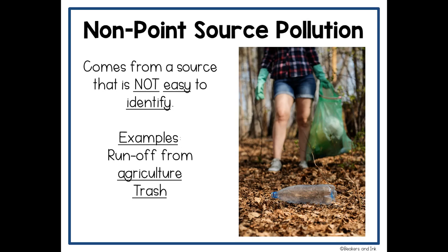Runoff from agriculture and trash are two examples often considered when we talk about non-point source pollution. For example, if we see trash floating in a stream, we don't know where it came from. If you're taking water samples in a stream and you notice that the nitrates and phosphates are high, you could infer that it was runoff from agriculture — but we don't know that for sure. Perhaps the levels could be high because a farmer had just fertilized his fields and some of it rained and washed off, or maybe animal waste wasn't being properly treated and got washed into a water source.